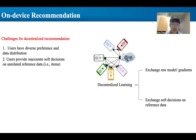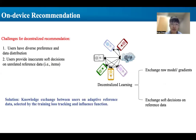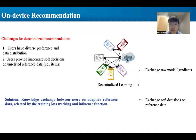To address these challenges, we introduce adaptive reference data customized for each user based on their training loss and influence function. This encourages knowledge exchange between users and enhances recommendation accuracy while prioritizing user privacy.